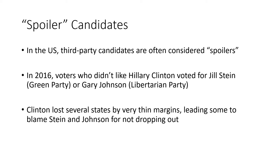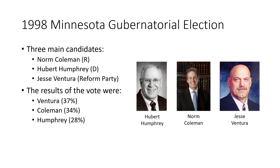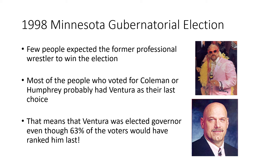One more example: in 1998, there was an election for governor of Minnesota with three main party candidates — a Republican, a Democrat, and Jesse Ventura of the Reform Party. Very unusually, Ventura won the election with only 37% of the vote — very low for a winner, even in a three-candidate race. Part of what made this outcome so controversial was that Jesse Ventura was a former professional wrestler, and many people were upset by the result.